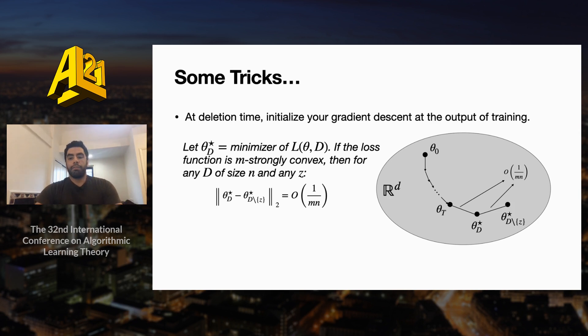And then we know by the fact on the left hand side that the distance between the optimizer on the training data set D and the optimizer on the updated data set D minus z is also in the order of 1/(μn). So at deletion time, if we initialize our gradient descent at the output of training θ_t, we are guaranteed that the initial distance to the new optimizer is small, and so we can get fast convergence to the new optimizer, in particular faster than fully retraining a gradient descent algorithm that uses random initialization.